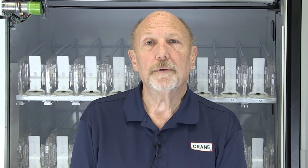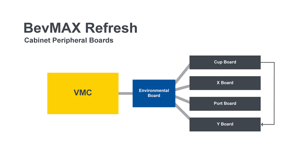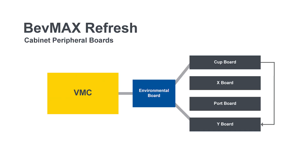It won't be uncommon if I see multiple boards beginning with a 0 or an odd number. That's where we're going to take the next step. We're going to start troubleshooting which boards are communicating and which aren't. The first thing we're going to do is turn the power off. We're going to disconnect the port board, the X motor board, and the Y motor board. When I disconnect the Y motor board, it also eliminates the cup board as well.